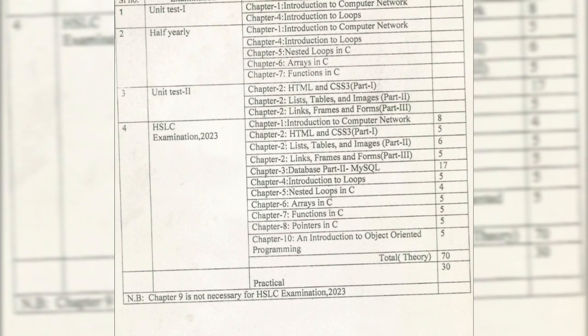Chapter 2 Part 1, Part 2, and Part 3. For the HSLC examination, from Chapter 1 which is Introduction to Computer Networks, there will be 8 marks. Chapter 1 is totally learning-based, so you just have to learn the answers. From Chapter 2, Part 1 will have 5 marks, Part 2 will have 6 marks, and Part 3 will have 5 marks, meaning a total of 16 marks coming from Chapter 2.